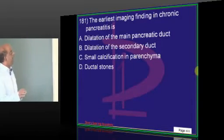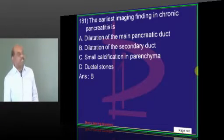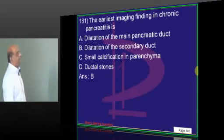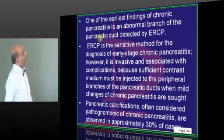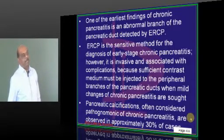Early estimating finding? Dilatation of... What was your answer? Dilatation of main pancreatic duct, you thought. It is the secondary duct. Earliest finding is an abnormal branch of the pancreatic duct. Branch of the pancreatic duct detected by ERCP.